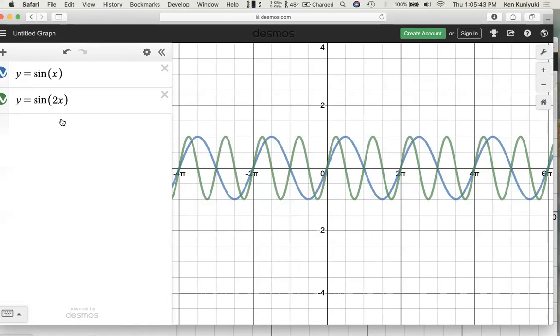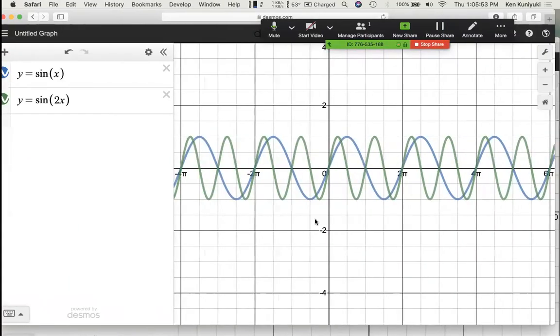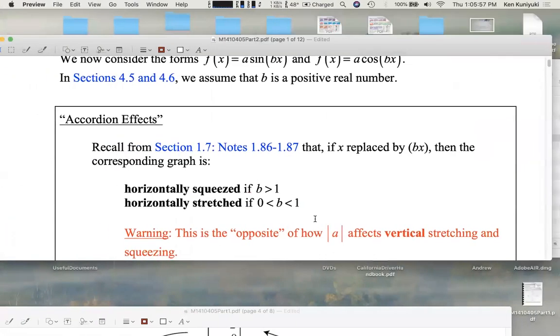That means the period, by the way, is half that, or pi. From here to here, it's pi. Accordion effects. It's kind of like we're squeezing and stretching an accordion here, the instrument.